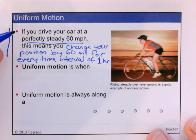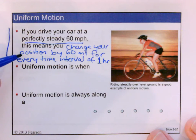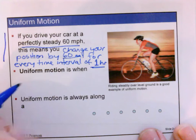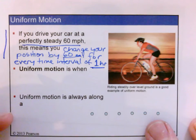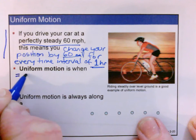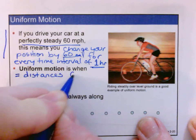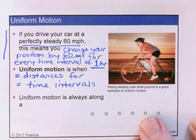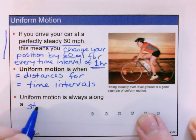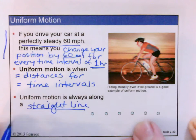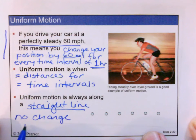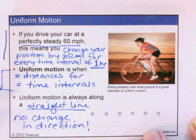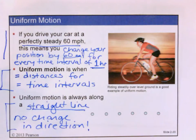Uniform motion is when equal displacements occur during successive time intervals. We could shorten that to: equal distances for equal time intervals. Uniform motion means steady speed and always along a straight line. There is never a change in direction if uniform motion is occurring. So it's not only steady speed and equal distances in equal time intervals, but it's also no changes in direction.